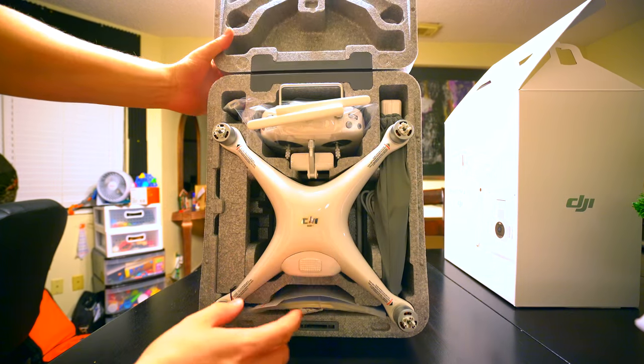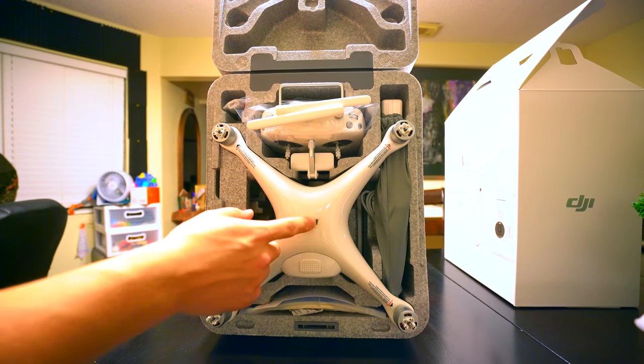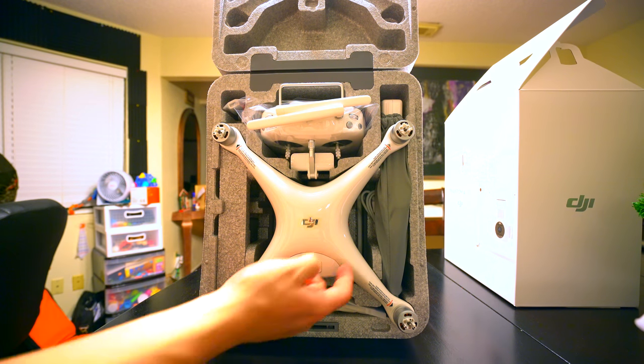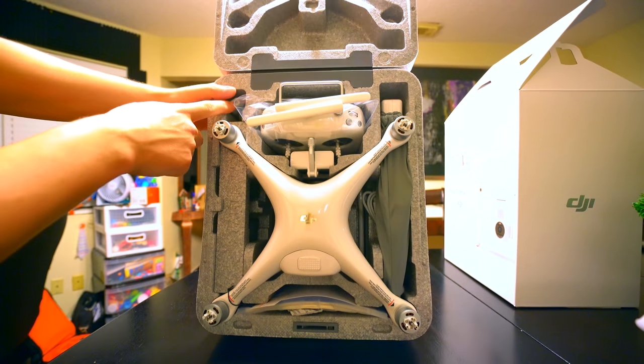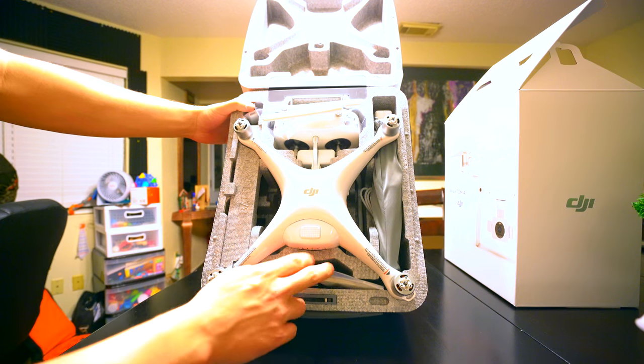So that's what it looks like inside. Looks like you got your controller right here, Phantom right here, battery, maybe a charger or something, USB cord, instruction manuals.